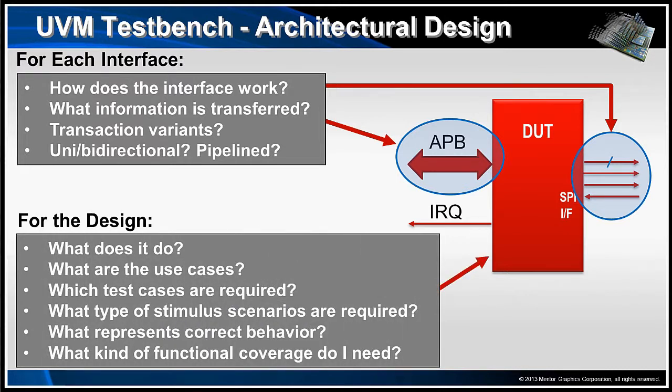Then we need to think about the actual design itself. What is the design supposed to do? What are the use cases? What variants is it going to be dealing with? And what type of stimulus do we need to create in order to exercise the functionality to make sure that the design is doing what it's supposed to do? We need to be able to represent correct behavior in the testbench. We want the test to be self-checking, so the testbench has to include information about correct behavior. And we want to think about what type of functional coverage we're going to need in order to know that we've actually exercised the DUT in all of the different modes that we'll need to have it run.